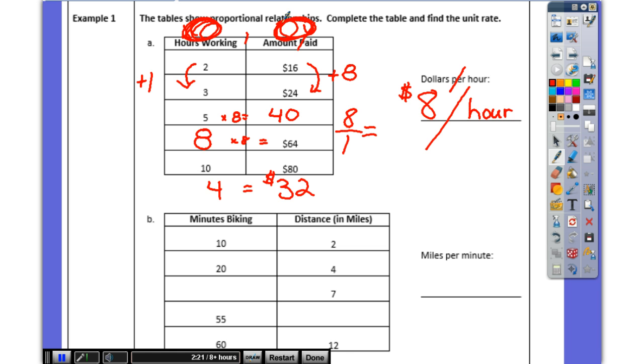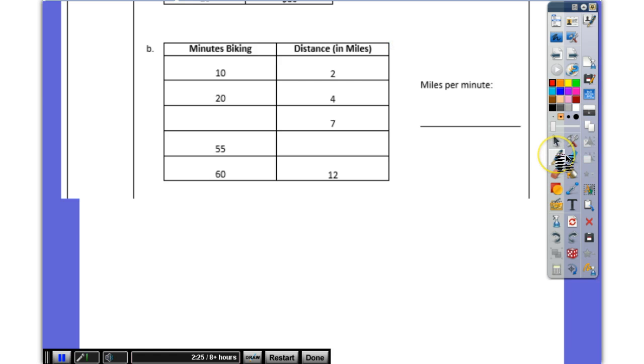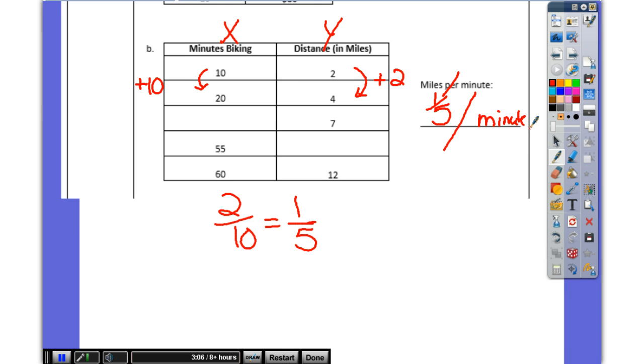Alright, let's try B. This is your x. This is your y. What do I do to get from 10 to 20? I add 10. What do I do here, 2 to 4? I add 2. So is it 2 over 10 or 10 over 2? 2 over 10. So I have 2 over 10, which simplifies to 1 over 5. So what does that tell me? I go 1/5 mile per minute.